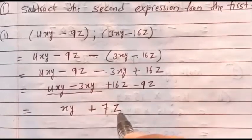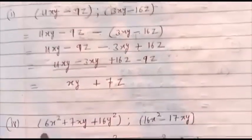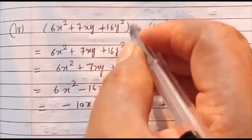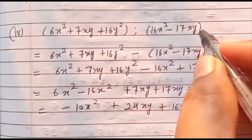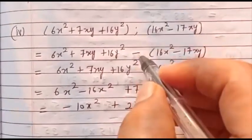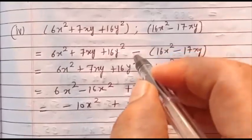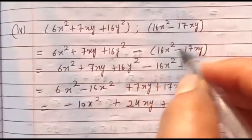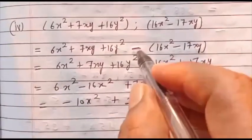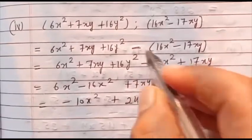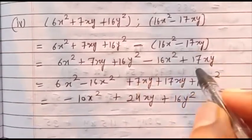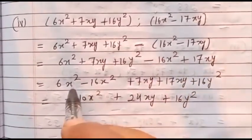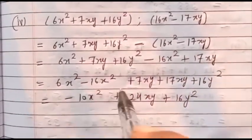Now the fourth question: 6x² plus 7xy plus 16y² is the first bracket, and 16x² minus 17xy is the second bracket. Before the second bracket, write the minus sign. Taking the minus sign inside the bracket: plus becomes minus, minus becomes plus.